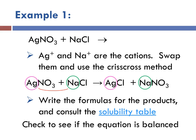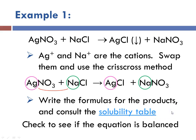We're going to check and make sure it's balanced — it is balanced. So the reaction of silver nitrate with sodium chloride produces silver chloride, which is a precipitate, and sodium nitrate.